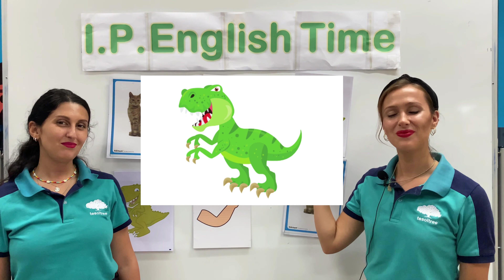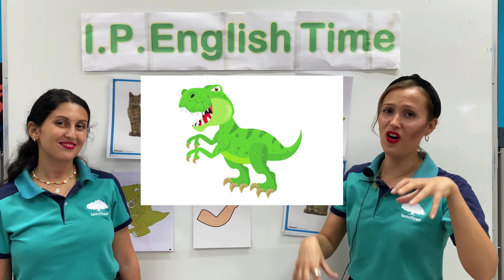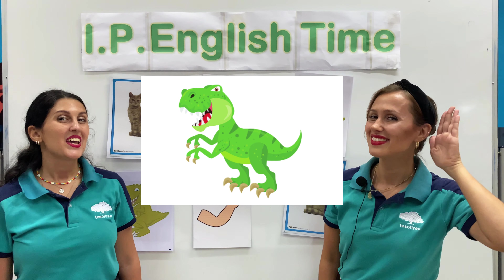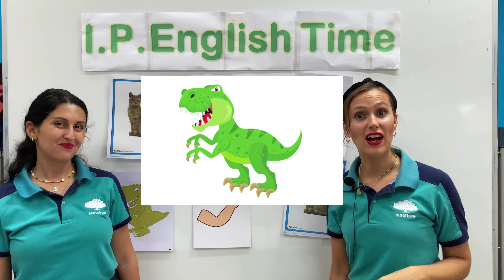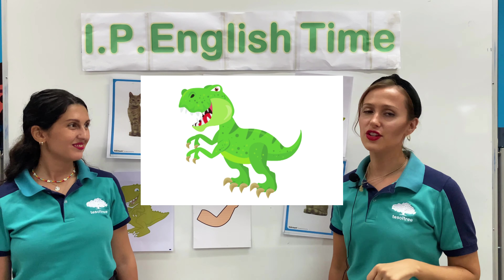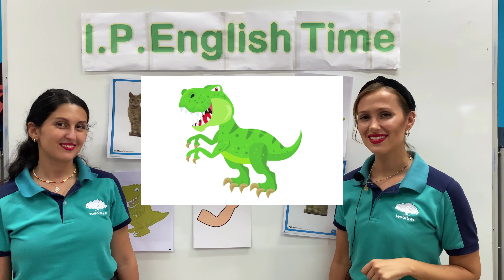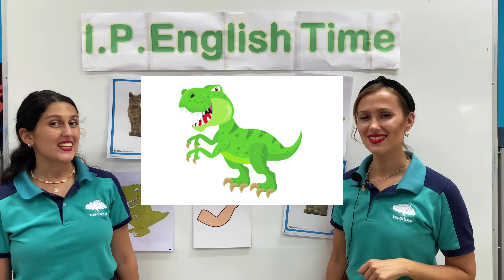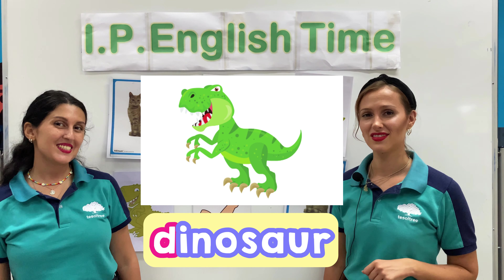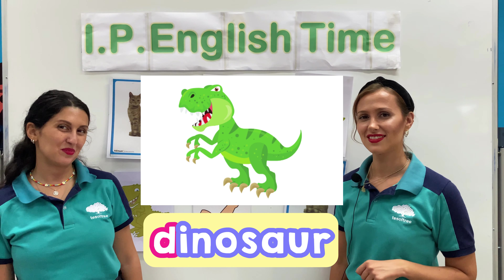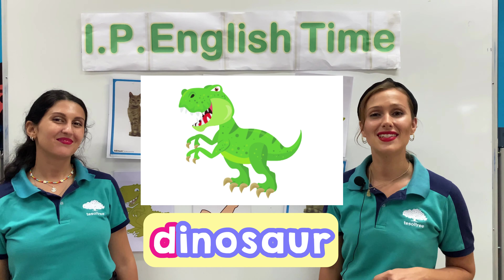Our final picture — what is it? It's a dinosaur. Now let's think — what is the first letter? Letter D. Letter D is for dinosaur.